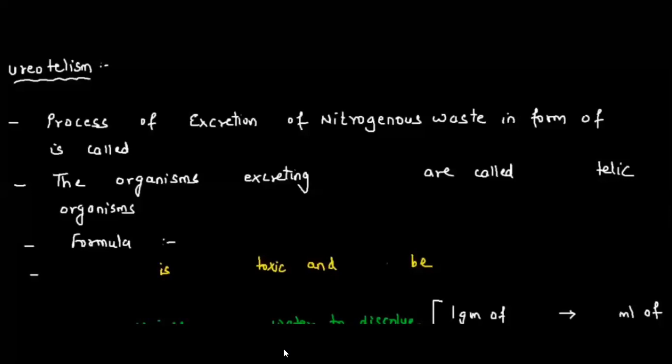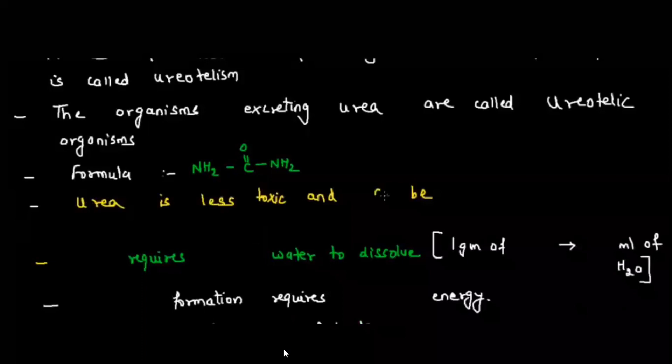Ureotelism: the process of excretion of nitrogenous waste in the form of urea is called ureotelism. Organisms excreting urea are called ureotelic. The formula for urea is NH₂-C(=O)-NH₂. Urea is less toxic and can be stored in the body for some time.